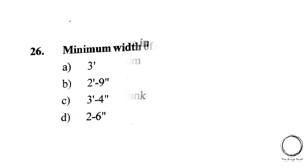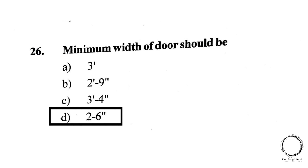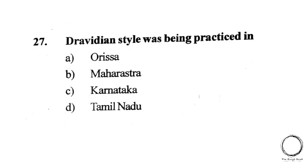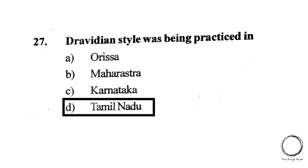Next question: The minimum width of a door should be — A) 3 feet, B) 2 feet 9 inches, C) 3 feet 4 inches, D) 2 feet 6 inches. The answer is D) 2 feet 6 inches. Next question: Dravidian style was practiced in — A) Orissa, B) Maharashtra, C) Karnataka, D) Tamil Nadu. The answer is D) Tamil Nadu.